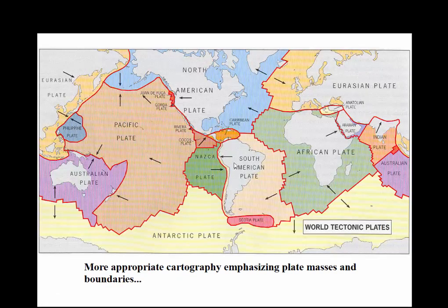You can see the cartographic representation of these plates and boundaries, and around these areas we have a number of different volcanic and tectonic hazards. The 2004 earthquake that created the tsunami killing over 250,000 people occurred at the Indian and Australian plate boundary off the coast of Sumatra.